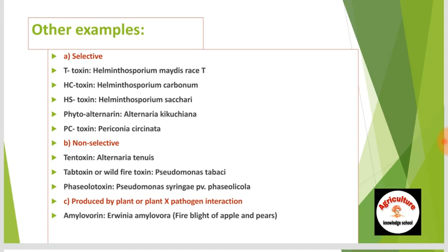Non-selective pathotoxins include: tentoxin (Alternaria tenuis), tabtoxin or wildfire phytotoxin — the causal agent being Pseudomonas tabaci — and fasciclatoxin from Pseudomonas syringae pv. fasciolicola. A third category is toxins produced by plant-pathogen interaction, such as amylovirin caused by Erwinia amylovora, the causal organism of fire blight of apple and pear.